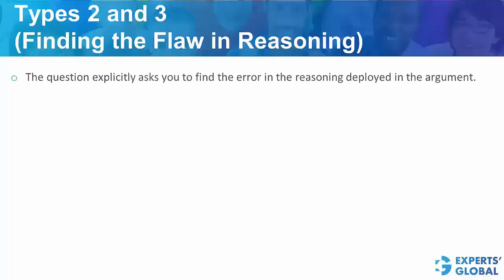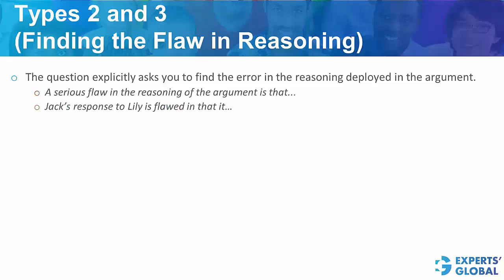In type 2, remember, the question explicitly requires you to find the error in the reasoning deployed in the argument. You either have an argument followed by this question stem: 'a serious flaw in the reasoning is that,' or you have a dialogue followed by this question stem: 'second person's response to the first person is flawed in that.'